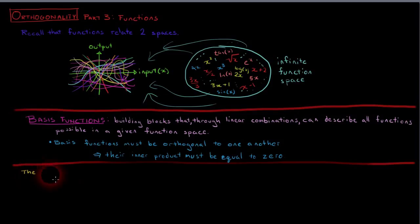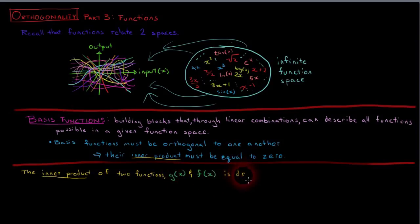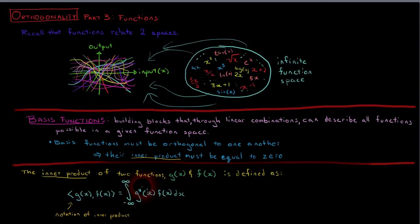We define the inner product of functions g(x) and f(x) as the integral from negative infinity to infinity of g star of x times f(x) with respect to x. If the inner product is equal to zero, then functions g and f are said to be orthogonal.